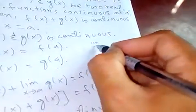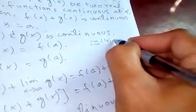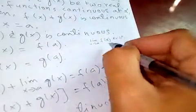If limit x tends to a f of x exists. Okay, if this exists, that means finite. And here we get finite numbers.